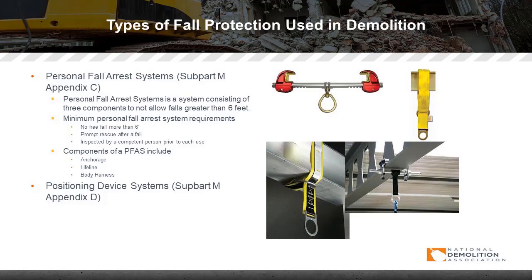We had to look at their fall arrest systems to make sure they could not fall more than six feet, since they worked away from the floor to the top of the truss. We also had to ensure we had a backup person or a plan to rescue them if they were to fall, and that equipment was inspected by a competent person to make sure it wasn't expired, damaged, or contaminated with oil or other chemicals.